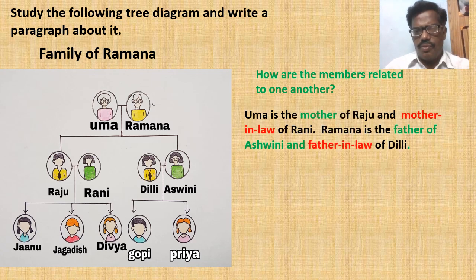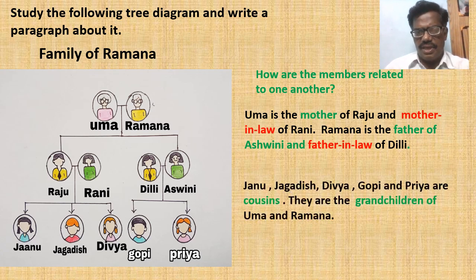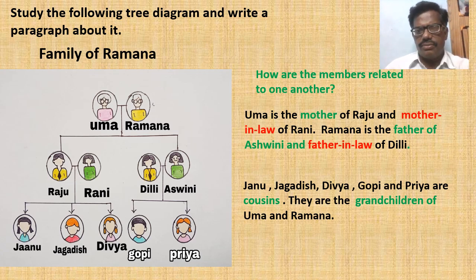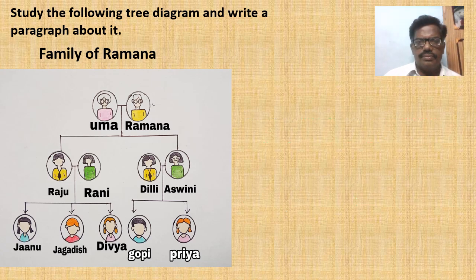Umma is the mother of Raju and mother-in-law of Rani. Ramana is the father of Asvini and father-in-law of Dili. Janu, Jagadish, Divya, Gopi, and Priya are the cousins — they are the grandchildren of Umma and Ramana. In this way we can make the slow learners write a number of sentences about the relations among the family members.